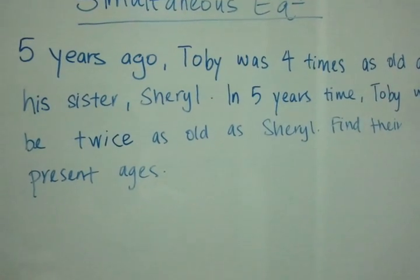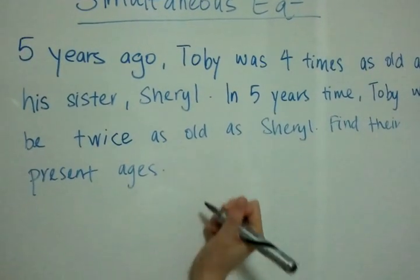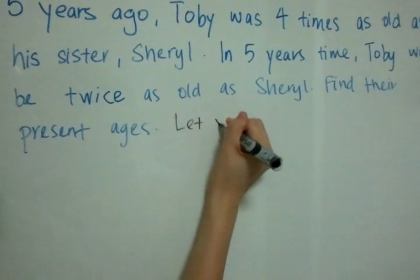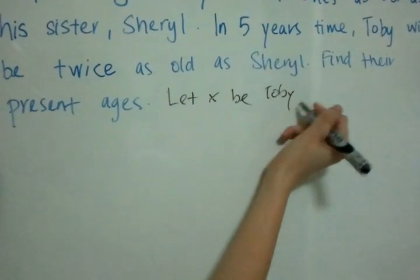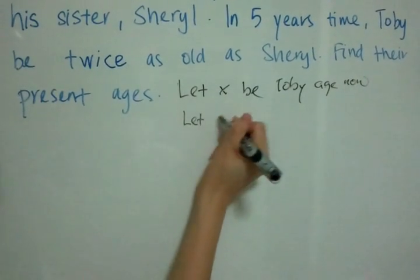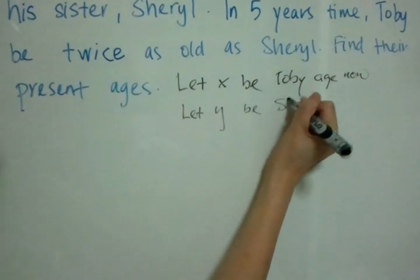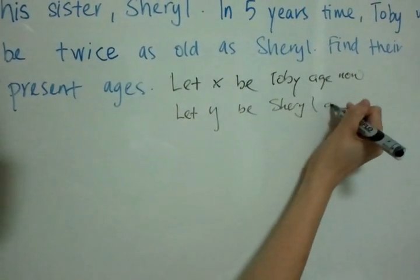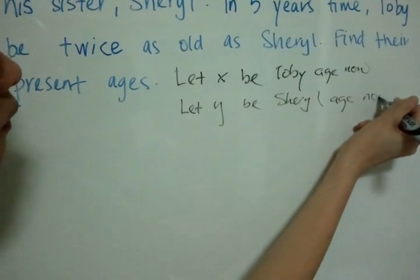Find their present ages. So first in simultaneous equations, we have to let X be Toby's age now, and of course we let Y be Cheryl's age now.